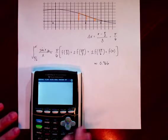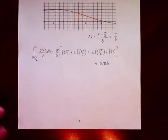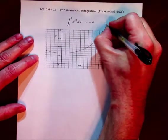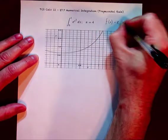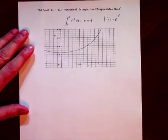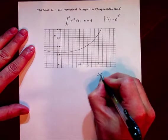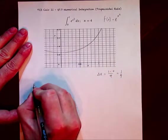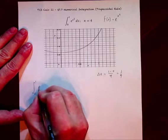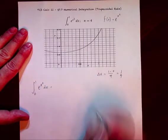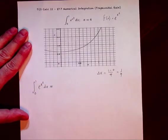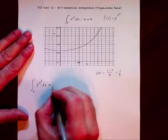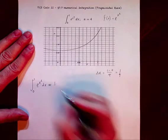This next example has f(x) = e to the x squared, going from zero to one with four subintervals. So delta x is 1 minus 0 over 4, which is one-fourth. Before we apply the trapezoidal rule — hold on, I forgot to divide by two on the last example. I'm pretty sure I just forgot because I was going too fast.